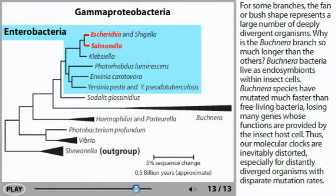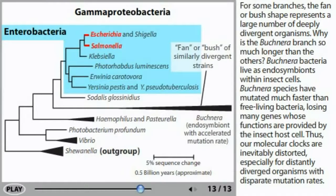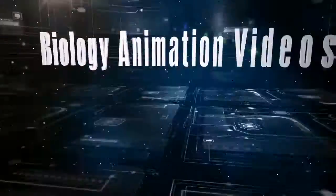For some branches, the fan or bush shape represents a large number of deeply divergent organisms. Why is the Buchnera branch so much longer than the others? Buchnera bacteria live as endosymbionts within insect cells. Buchnera species have mutated much faster than free-living bacteria, losing many genes whose functions are provided by the insect host cell. Thus, our molecular clocks are inevitably distorted, especially for distantly diverged organisms with disparate mutation rates.